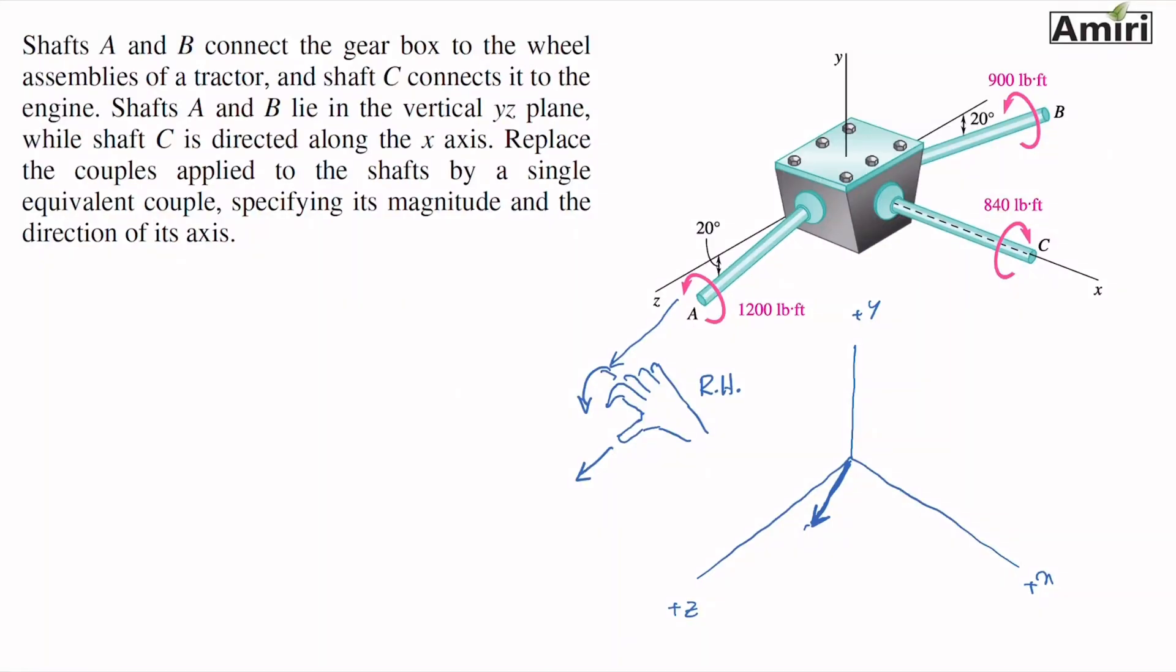Same thing, right-hand rule for B. That also has 20 degrees here, 20 degrees there. It's only on z and y, there's no x on it. And then right-hand rule for point C, your thumb is going to point in this direction.